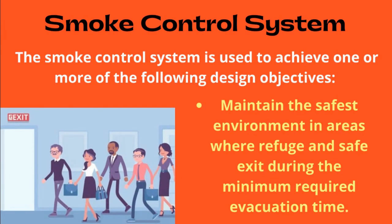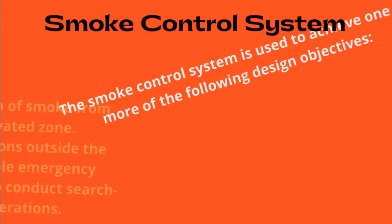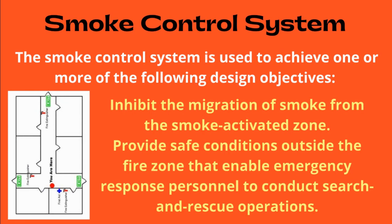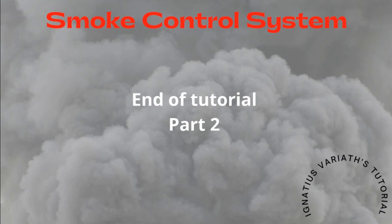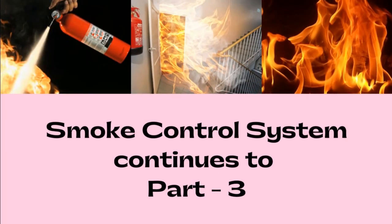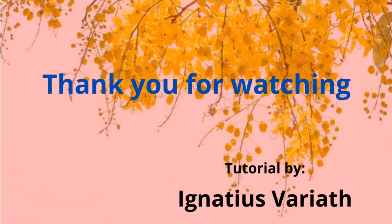Additional objectives include maintaining the safest environment in refuge areas during the minimum required evacuation time, inhibiting the migration of smoke from the smoke-activated zone, and providing safe conditions outside the fire zone to enable emergency response personnel to conduct search and rescue operations. This concludes part 2 of the tutorial; the smoke control system continues in part 3. Thank you for watching.